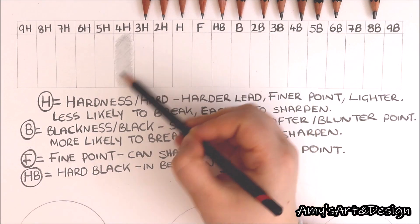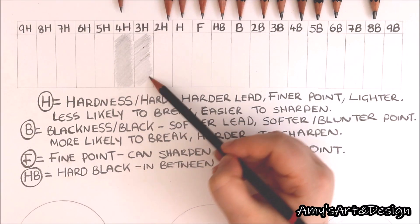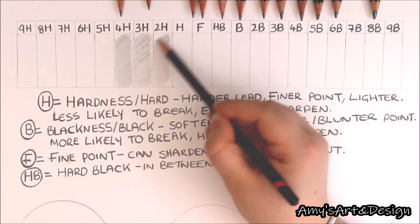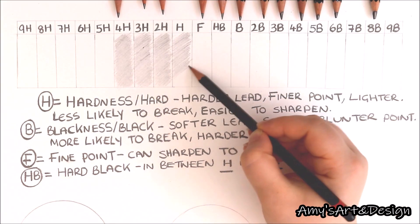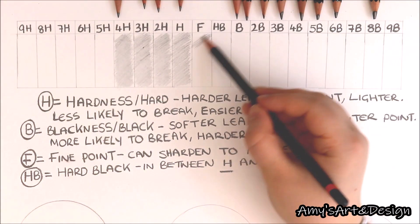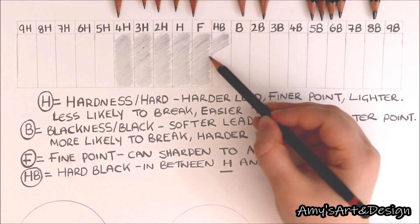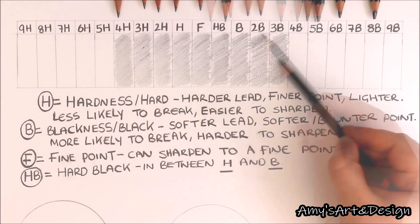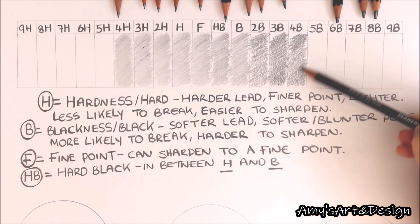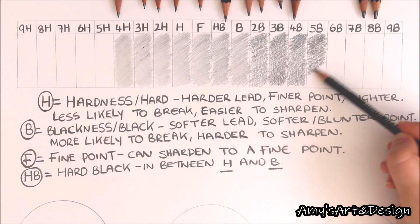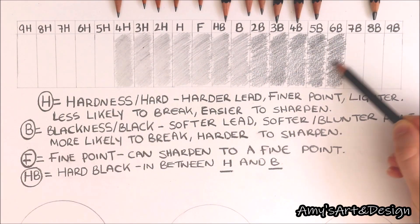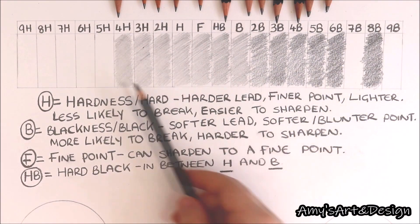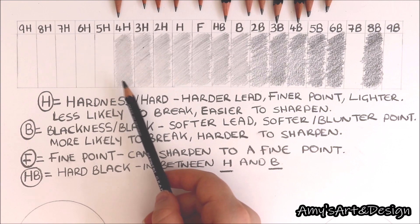Moving quickly through the remaining pencils — since this is just repeating the same process of using the side of the pencil to put a base layer down — you can start to see how the shades are gradually getting darker. Each pencil slightly differs from the last, transitioning from a harder lead to a softer lead, which makes the shading appear a lot darker.